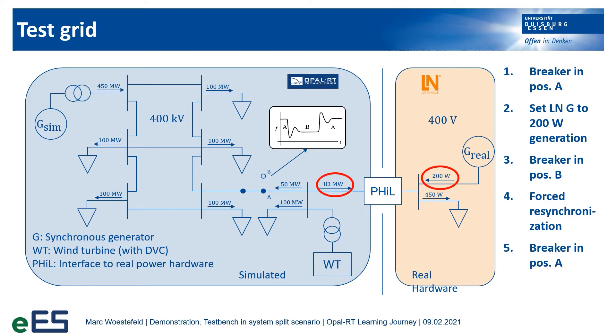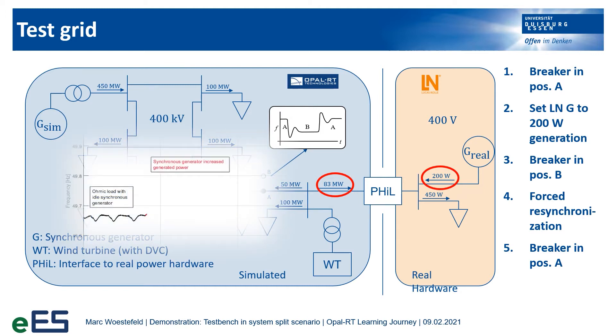Now let us increase the power in-feed from the real synchronous generator. Since the generated load is increased, the simulated load will be decreased, so the frequency will rise due to the mentioned P-f droop curve.